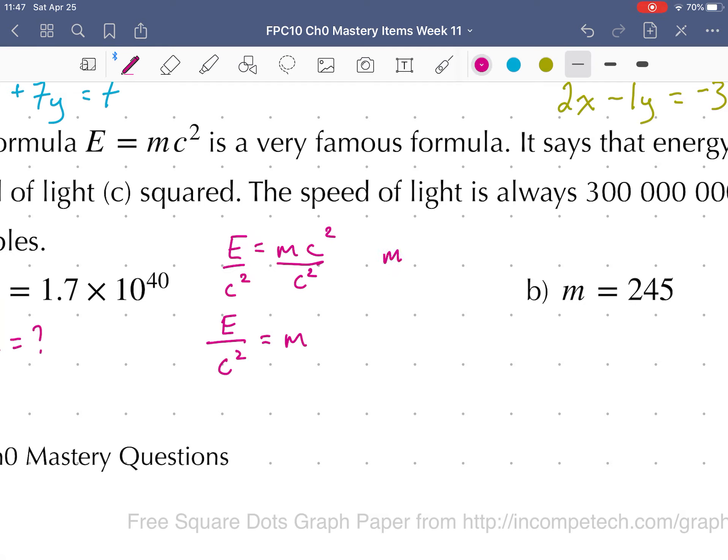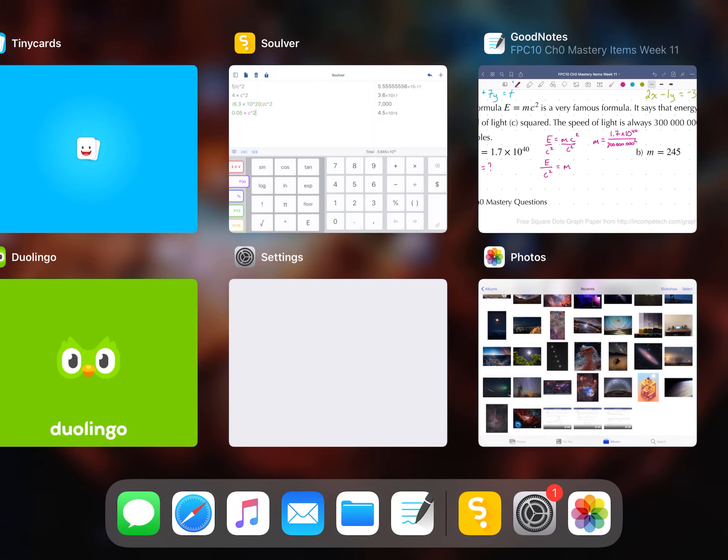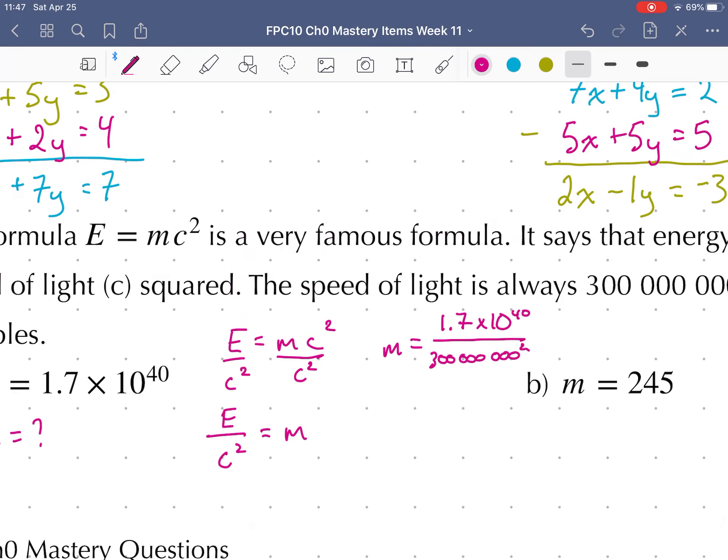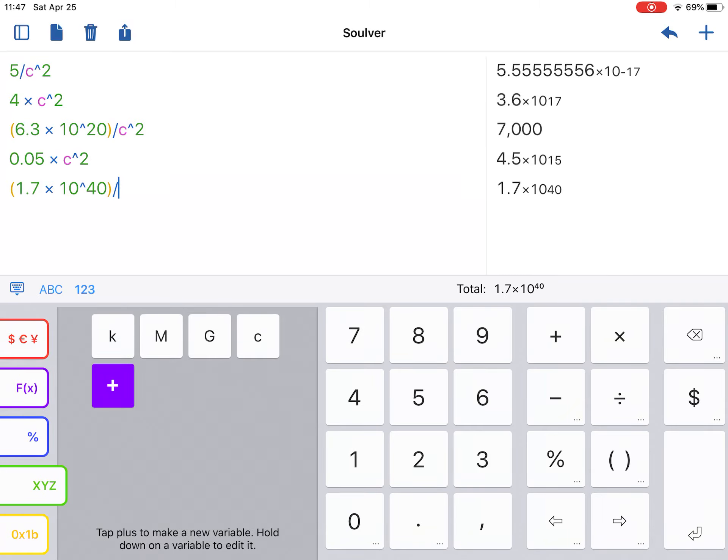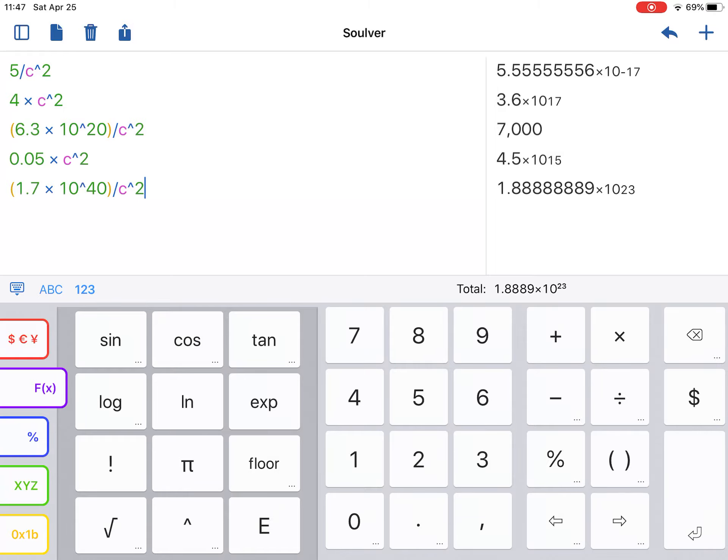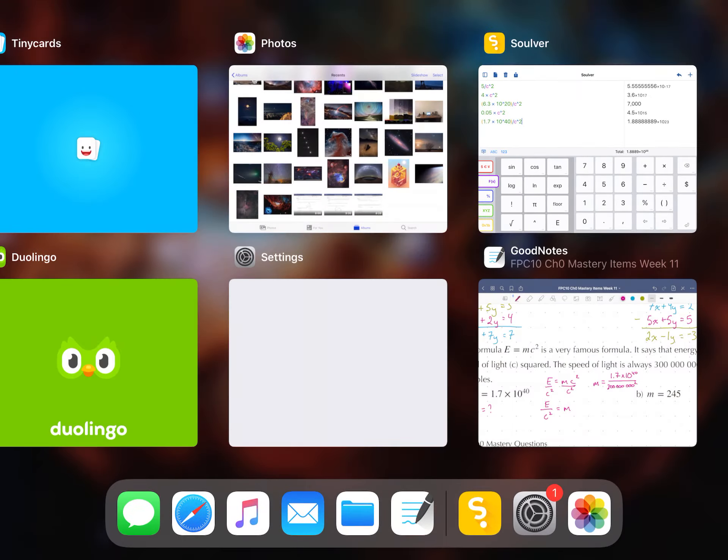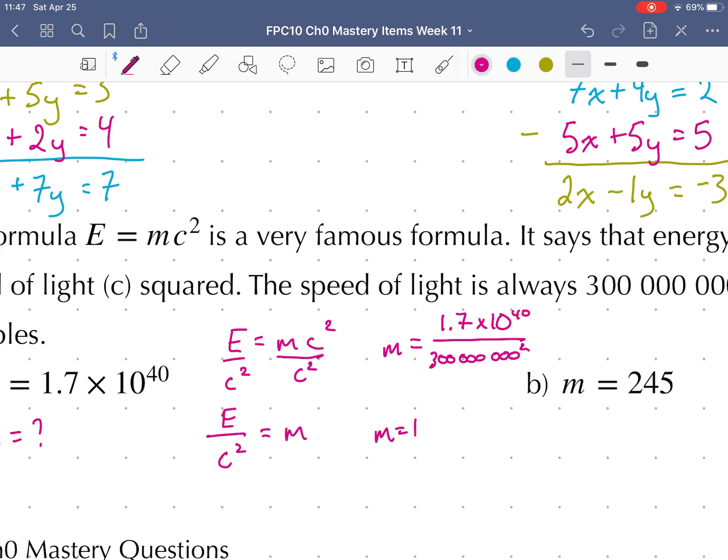So in this case, our mass is going to equal our energy, 1.7 times 10 to the 40th, divided by 300 million squared. I go to my calculator. I put that in brackets, 1.7 times 10 to the power of 40. That's on my top. I divide that by 300 million squared. I'm able to write down c and then square it, and I get 1.9 times 10 to the 23. 1.9 times 10 to the power of 23.